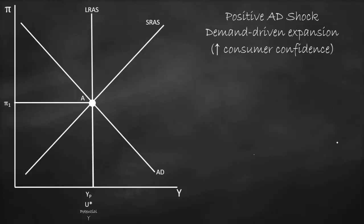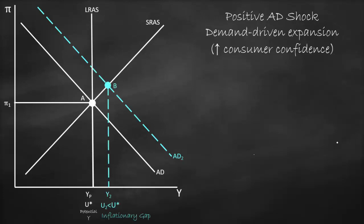If we have a positive aggregate demand shock, aggregate demand will shift to the right. We have a new point of intersection between aggregate demand 2 and the short-run aggregate supply curve. Here we'll have a higher output level, y2. This means we'll produce above our potential. Consequently, our unemployment rate will be lower than the natural rate of unemployment, which will cause an inflationary gap and result in a higher inflation rate.